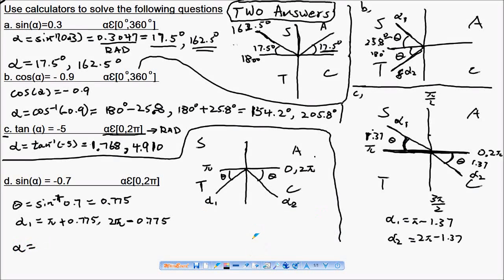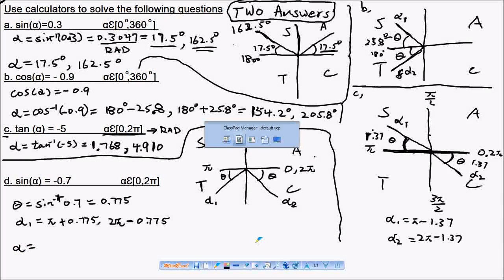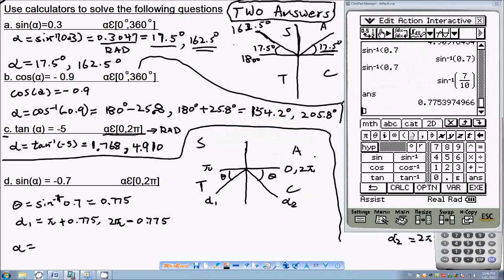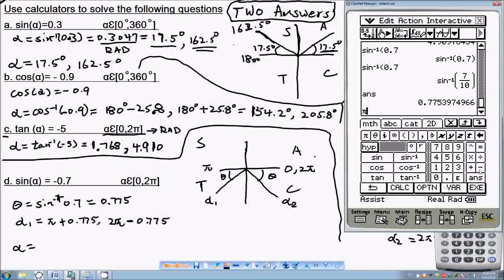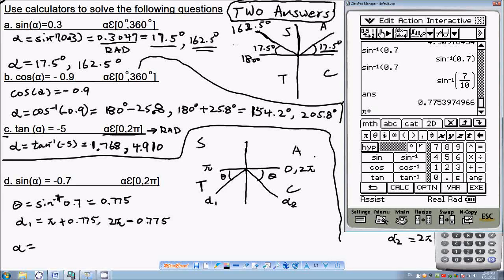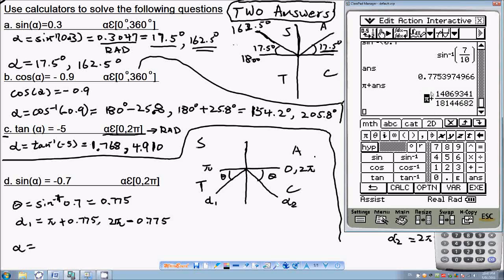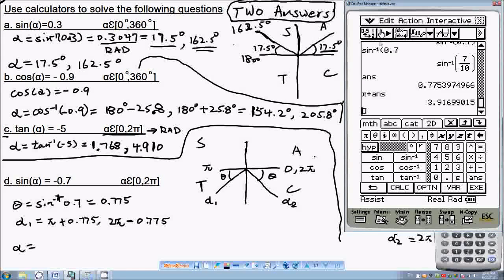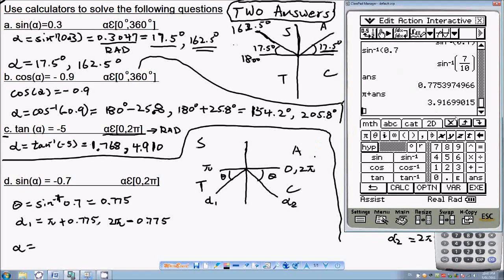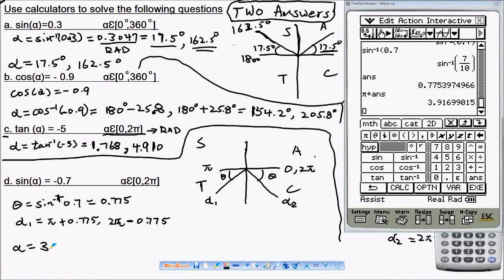Let's use our calculator. Pi plus the answer, which is 3.917.